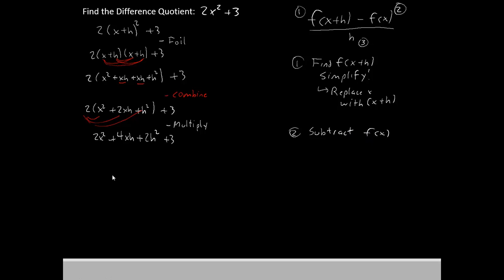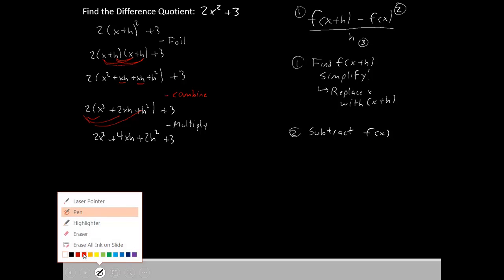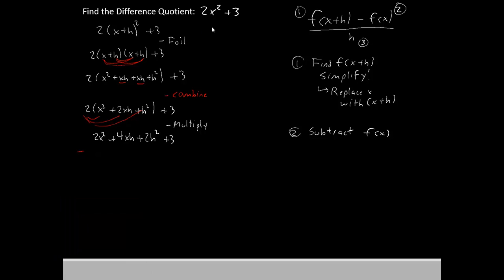So we're going to put a little minus sign down here, and we're going to subtract the 2x squared. Make sure you put it underneath the terms that match up with it. And we're also going to subtract the positive 3 to give us minus 3.